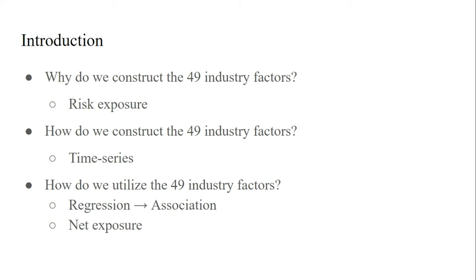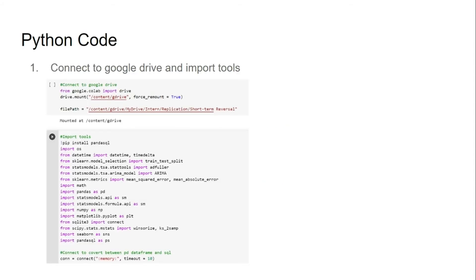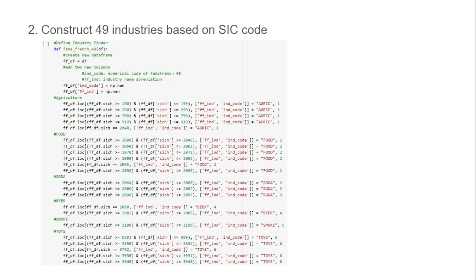In the rest of the video we'll show how to construct the time series for each industry using Python. Starting the Python code, we first connect Google Colab to Google Drive and import the necessary libraries. Next, we construct the 49 industries based on the SIC code. We define a function that takes in a data frame which includes a column of SIC codes, and this function assigns an industry name and code based on the SIC code.